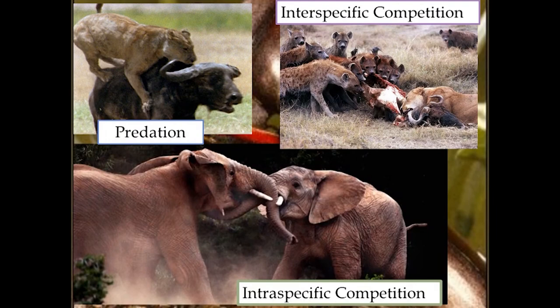These pictures represent different methods of interaction. Predation is shown as a lion attacks and kills a water buffalo. Interspecific competition is shown between the hyena and the lion as they try to gain access to food. Intraspecific competition is shown between elephants fighting over territory or access to a female.